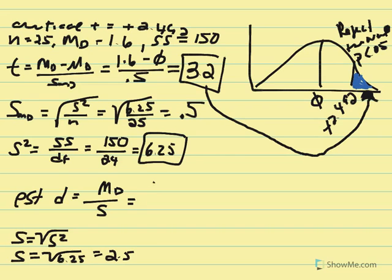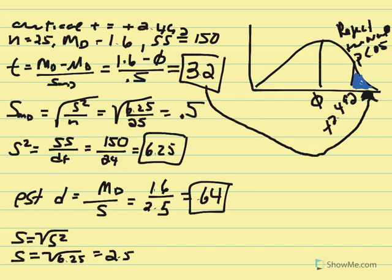Cohen's d of 0.64 expresses the mean difference in standard deviation units, removing the influence of sample size to give a standardized effect size. This is considered a medium-to-high effect — anything above 0.8 is high, 0.5 is medium — so we're between medium and high, supporting our rejection of the null.